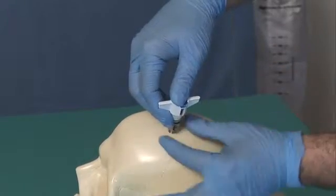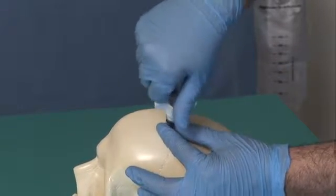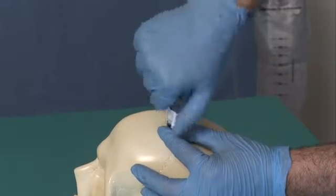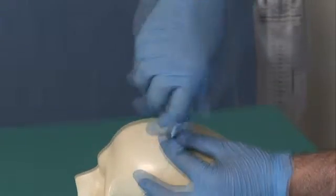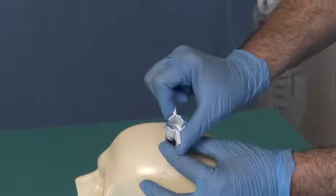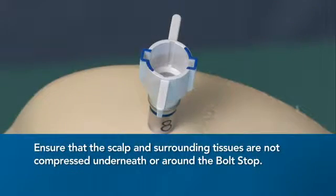Place the bolt and bolt stop in the twist drill hole, advance, and screw in. Stop advancing once the bolt stop provides resistance against the skull bone. Ensure that the scalp and surrounding tissue are not compressed underneath the bolt stop.